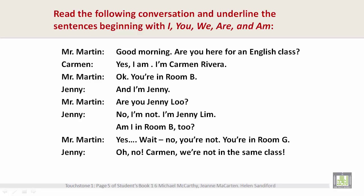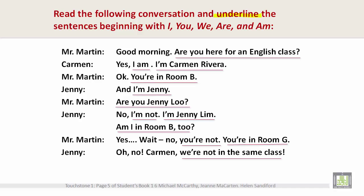Now let's read the following conversation again and underline the sentences beginning with I, you, we, are, and them. And here are those sentences: Are you here for an English class? I am. I'm Carmen Rivera. You're in room B. I'm Jenny. Are you Jenny Lou? I'm not. I'm Jenny Lim. Am I in room B too? You're not. You're in room G. We're not in the same class.